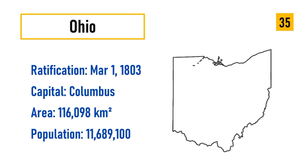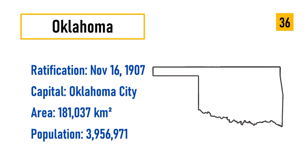Number 35: Ohio, ratification March 1, 1803, capital Columbus, area 116,098 square kilometers, population 11,689,100. Number 36: Oklahoma, ratification November 16, 1907, capital Oklahoma City, area 181,037 square kilometers, population 3,956,971.